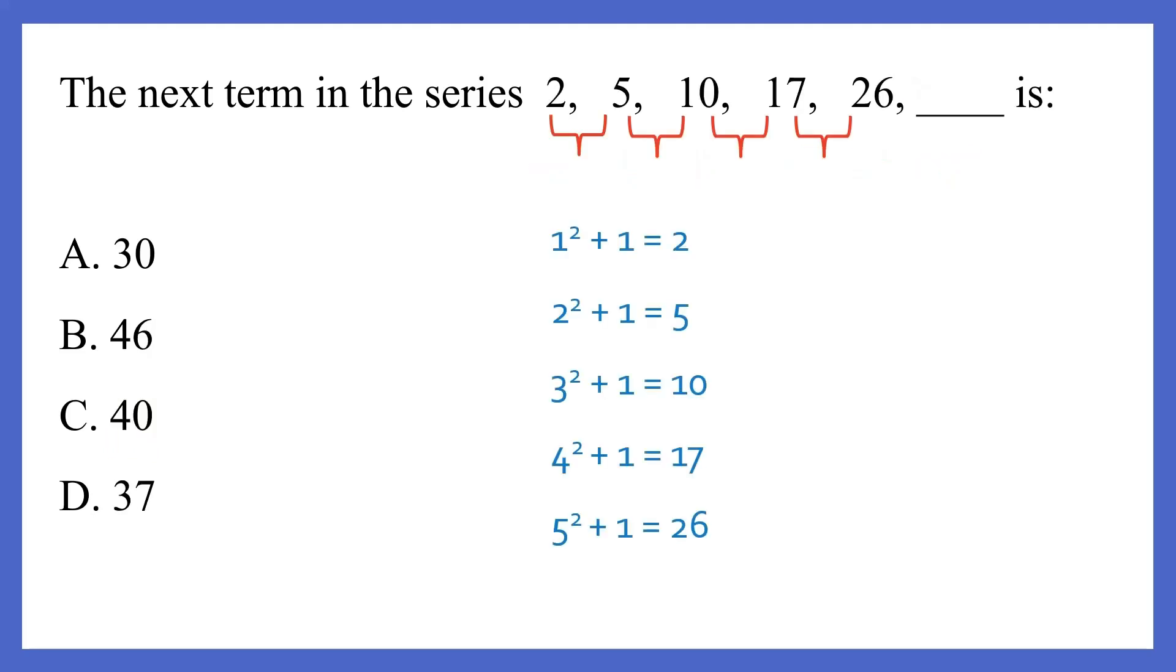The next question, the series here is 2, 5, 10, 17, and 26. So if you look closely, you can see that it's similar to the previous question in the sense that they are the squares of numbers, but the number 1 has been added to all the squares. So if you look at the first number here, 2, it's basically 1 square plus 1. 1 square is 1, plus 1 is equal to 2. Then 5, the next number 5, is 2 square plus 1. 10 is 3 square plus 1. 17 is basically 4 square. 4 square is 16, plus 1 is equal to 17. And 26 is 5 square plus 1.